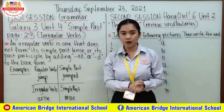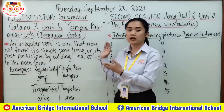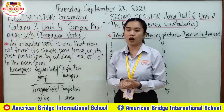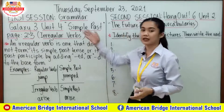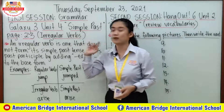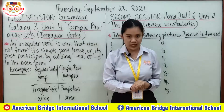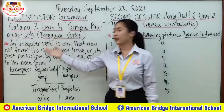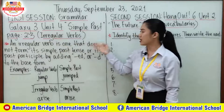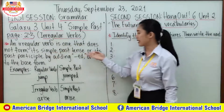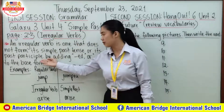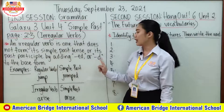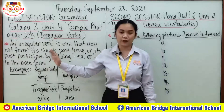Now, let's move on to another topic regarding or related to our lesson for today — the Simple Past Irregular Verbs, on page 23. Now, what is an irregular verb? An irregular verb is one that does not form its simple past tense or its past participle by adding -ed or -d to the base form.